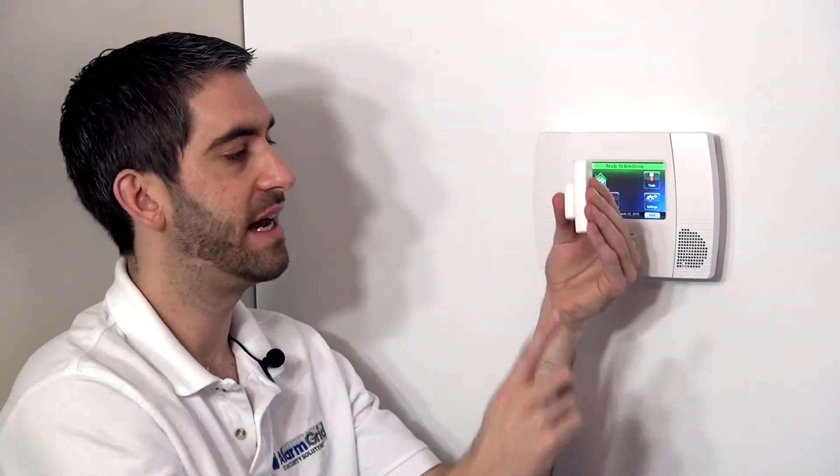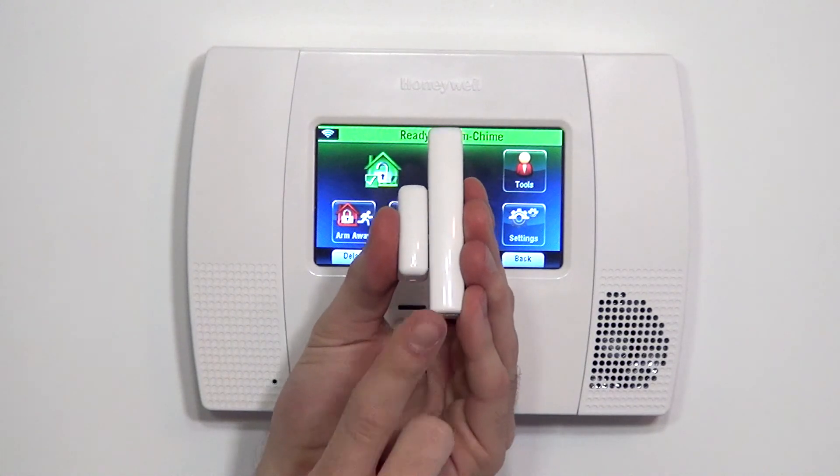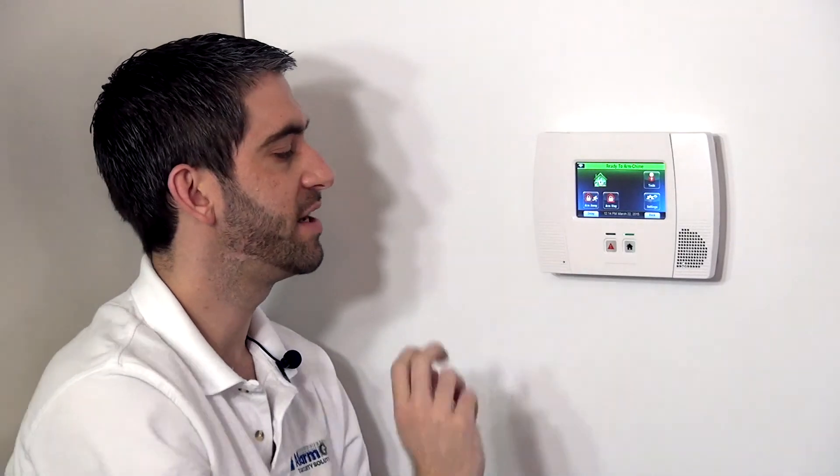So that is how you would program a 5820L wireless slimline door contact, window contact to your Lynx Touch L5200 system. We hope you enjoyed our video. We invite you to subscribe to our channel. And if you have any questions on the 5820L programming or the Lynx Touch L5200 system, we invite you to email us support at alarmgrid.com.